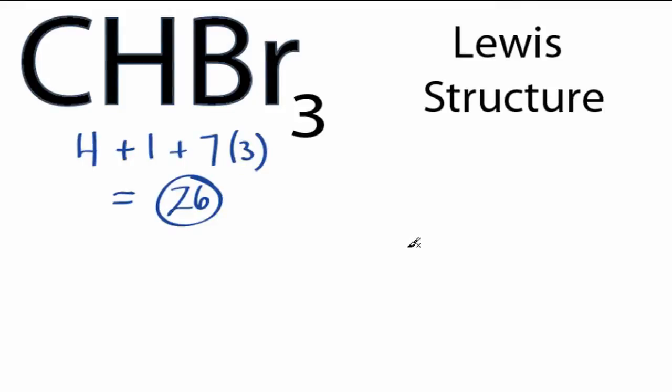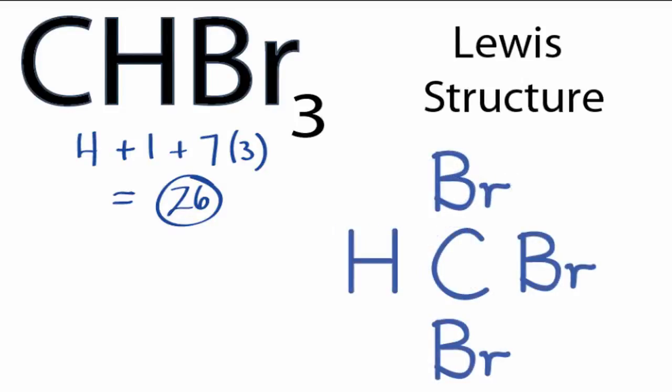Hydrogens will always go on the outside of a Lewis structure, and then we look at carbon and bromine. Carbon is the least electronegative, so we're going to put the carbon at the center, we'll put the H on one side, and then we'll put the bromines around it. We have 26 valence electrons for the CHBr3 Lewis structure.